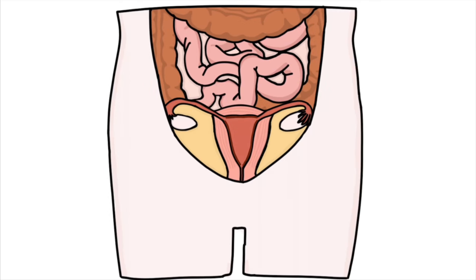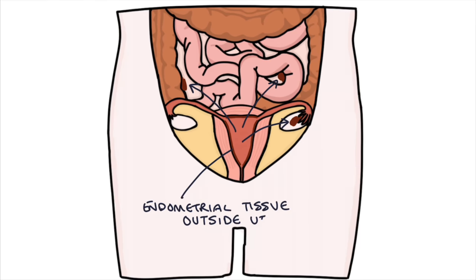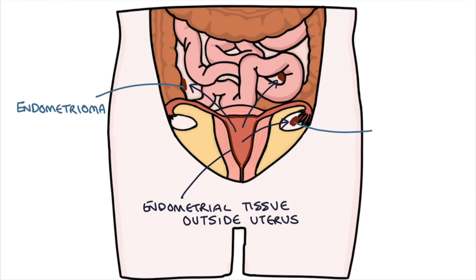Endometriosis is a condition where there's endometrial tissue outside of the uterus, usually somewhere else in the pelvis. When you have a lump of endometrial tissue outside the uterus, we can call it an endometrioma. When you have endometriomas in the ovaries, sometimes we can call them chocolate cysts.